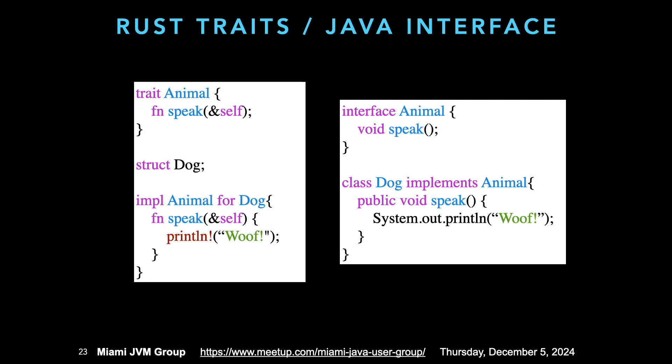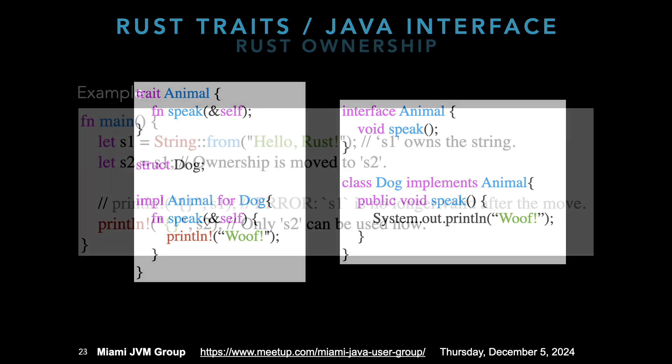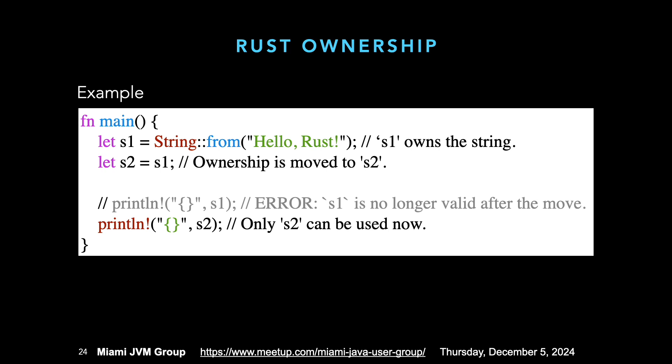Let's take a look at Rust traits. A trait is similar to Java's interface. We can see a small example of a trait — an interface for Animal — and we see a Dog that's implemented. It looks very similar. As for Rust ownership: when you create a string and assign it to variable S1, S1 owns the string. When you assign it to S2, S1 is no longer accessible — the ownership has moved. As you move from method to method, you explicitly say whether you're borrowing it or owning it, which keeps track of where memory is allocated.